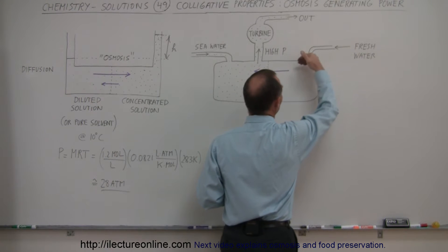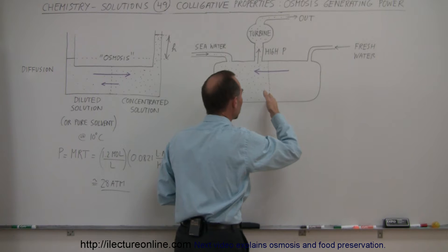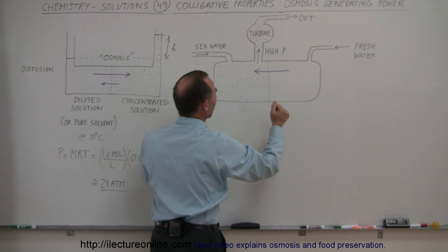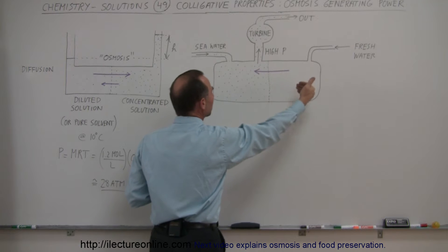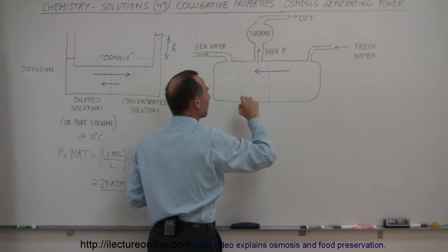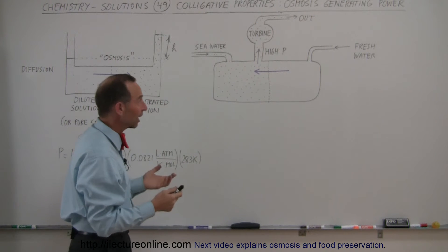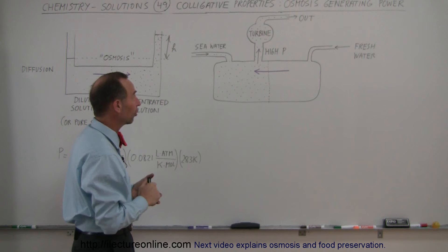You pump in fresh water on one side, we have a semi-permeable membrane, you pump in seawater on the other side. When we have a situation like this, you know there's going to be a net flow of water molecules across the permeable membrane into the region where there's a higher concentration of solute, in this case the salt in the seawater.